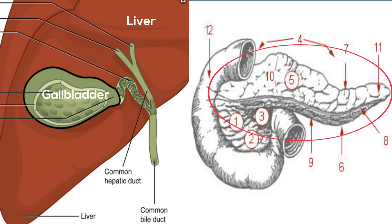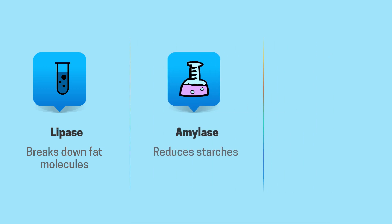Three pancreatic enzymes help digest nutrients. Lipase breaks down fat molecules into acids, amylase reduces starches into simple carbohydrates, and trypsin breaks up the proteins.